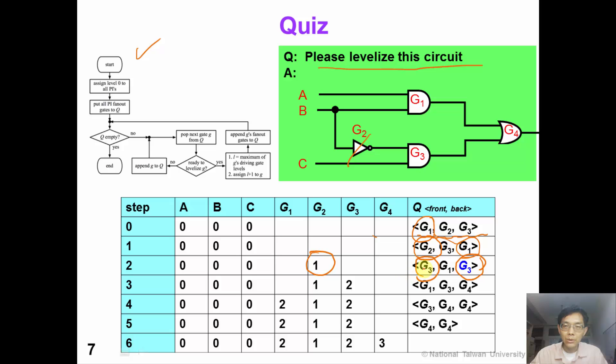And then we pop out G3. The G3 is levelized to 2. And then G1 is also levelized to 2. Finally, G4 is levelized to 3. Have you got it correctly?